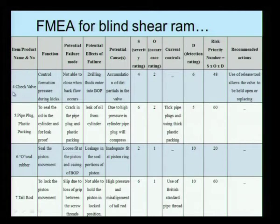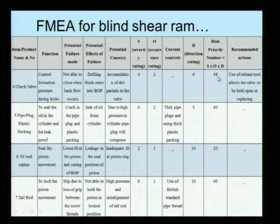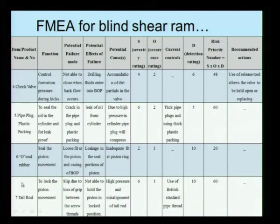You can look at the fourth component — the check valve. The essential function of the check valve is to control formation pressure during kicks. The potential failure mode is being unable to close when backflow occurs. The effects of the failure are that drilling fluid enters into the BOP, which is not supposed to happen. The potential cause is accumulation of dirt particles inside the valve. The severity is 4, occurrence rating is very rare, but detection rating is slightly higher, giving a risk priority number of 48. The recommended action is use of a release tool to hold the valve open, or to replace the valve whenever required. A design FMEA can be conducted for different component-level analysis for a BOP, as shown in this example.